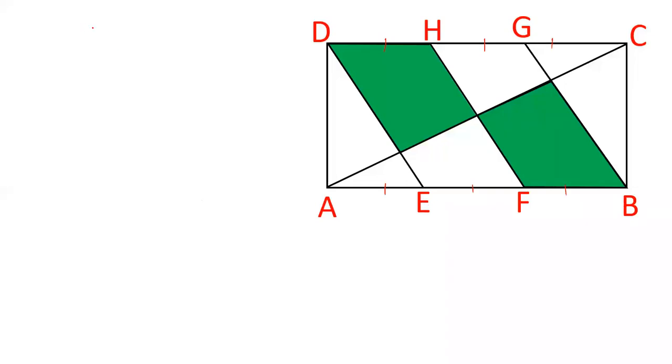Now as EF is equal to DH and EF is parallel to DH, therefore EFHD is a parallelogram and the same is for FBGH. FBGH is a parallelogram.